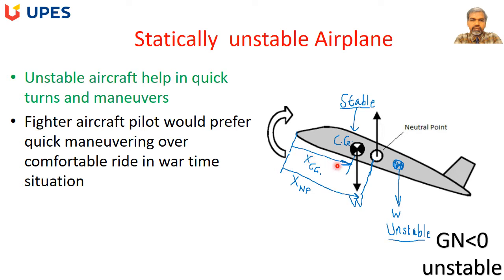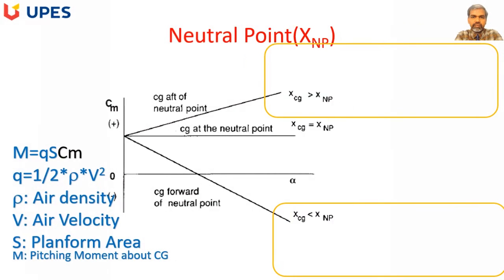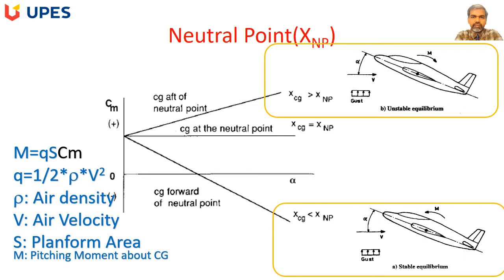In aerospace, we measure the distance of the center of gravity from the nose — XCG — and the distance of the neutral point from the nose — XNP. If XNP is greater than XCG, the neutral point is behind and CG is ahead, making that a stable configuration. If CG is behind the neutral point, it is vice versa — that airplane is unstable.